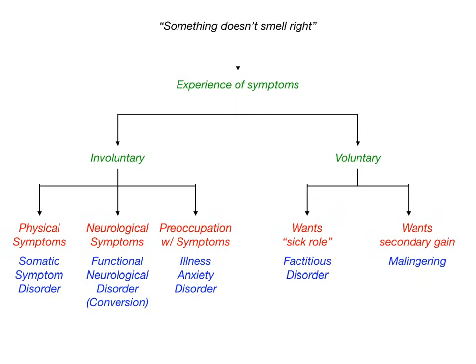To summarize the flowchart: something doesn't smell right — ask yourself, is it involuntary or voluntary? If involuntary: physical symptoms = somatic symptom disorder; neurological symptoms = functional neurological disorder (aka conversion); worrying about possible disease with absent or mild symptoms = illness anxiety disorder, previously called hypochondriasis. If voluntary: assuming the sick role (as patient or caregiver) = factitious disorder; producing symptoms for secondary gain like time off work, disability insurance, money, or housing = malingering.